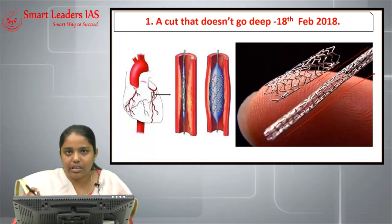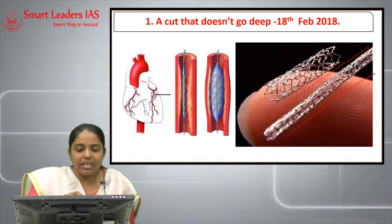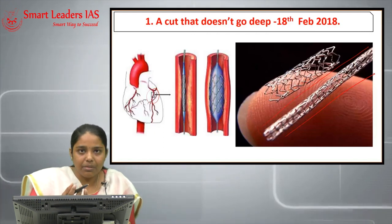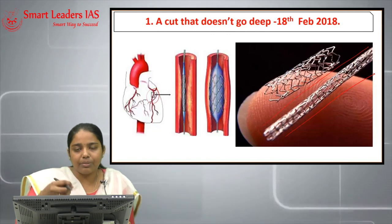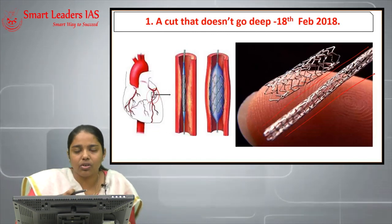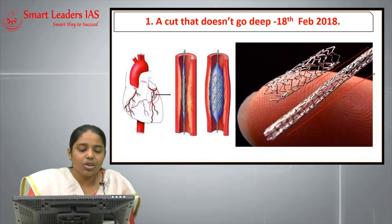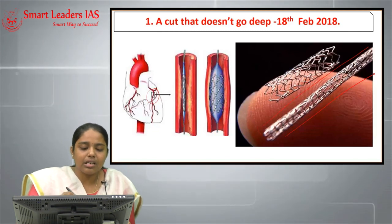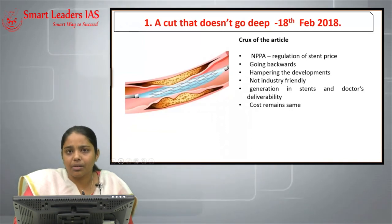A coronary stent is very thin — it is a mesh-like structure. It is inserted into artery walls. The main purpose of the artery is to take blood from the heart and supply it to other parts of the body. However, when there is a blockage, blood is not able to pass through, so stents are placed to remove the blockage and make blood flow easier.